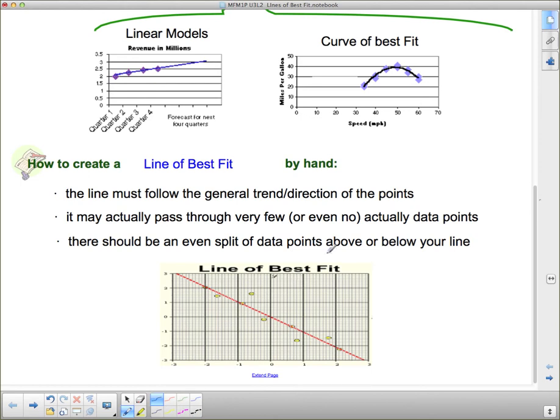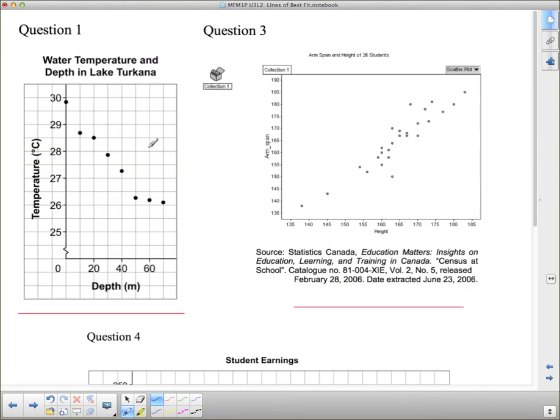So if we're looking at this line of best fit here, it's generally along the same slope as the data points. It's gone through a few data points, but there are about the same number of data points above the line as there are below. It's not quite. We've got two data points above and three below, but it's generally an even split. So this is a pretty good line of best fit. So we're going to have a look at the other graphs on here.